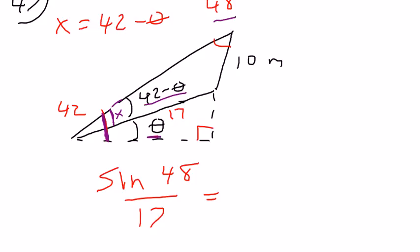48 over, so sine of 48 over this side. Make it a different color so you can see that.